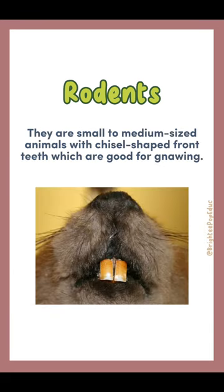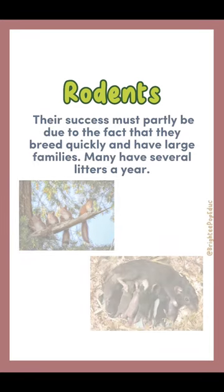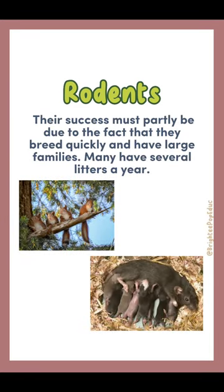They are small to medium-sized animals with chisel-shaped front teeth which are good for gnawing. Their success must partly be due to the fact that they breed quickly and have large families. Many have several litters a year.